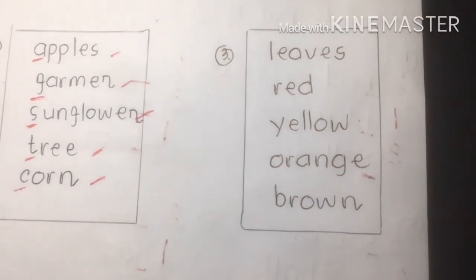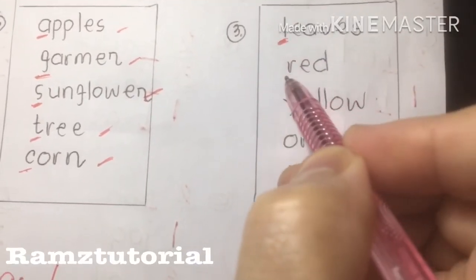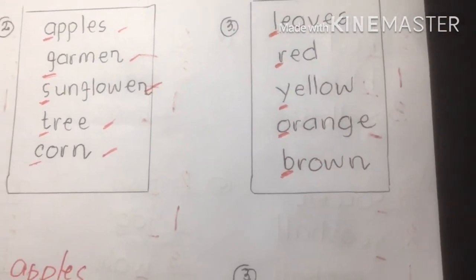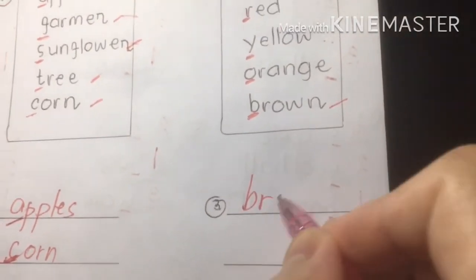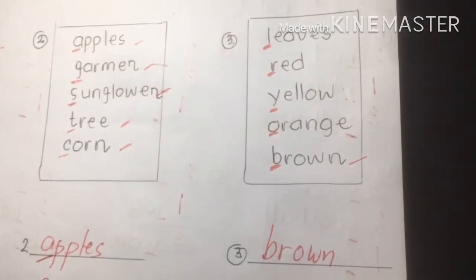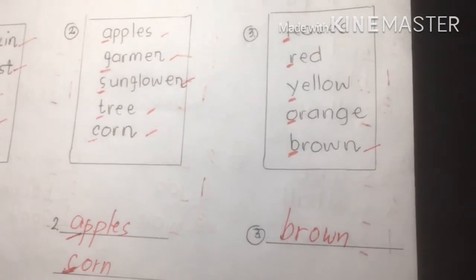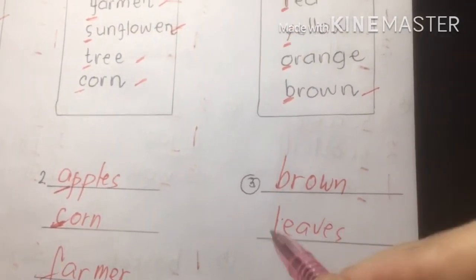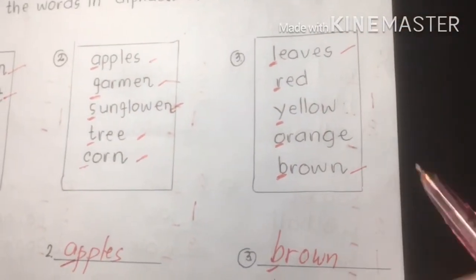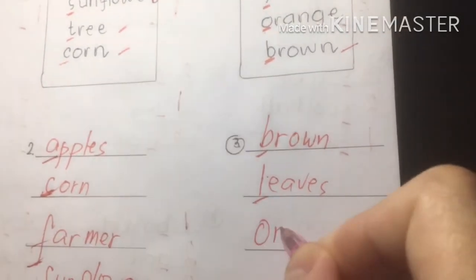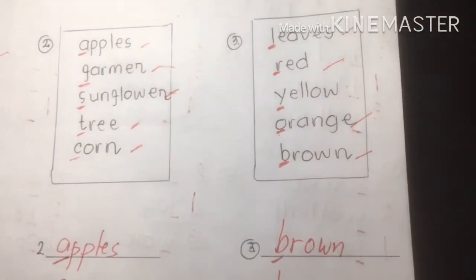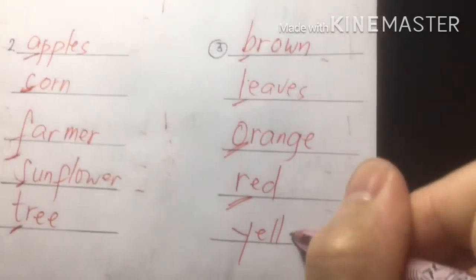Group three: leaves, red, yellow, orange, brown — colors. Initial letters: L, R, Y, O, B. Start with B — brown is first. Then L — leaves is second. Then O — orange is third. Then R — red is fourth. And Y — yellow is last. The arrangement: brown, leaves, orange, red, yellow.